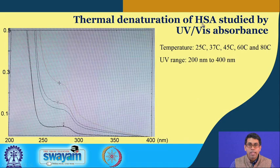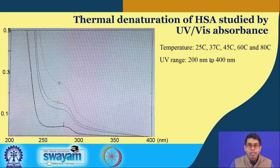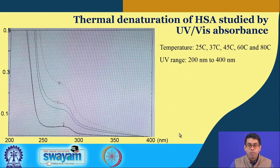For thermal denaturation of HSA studied by UV-visible absorbance, five different temperatures were used: 25°C, 37°C, 45°C, 60°C, and 80°C. The protein sample was heated at these five temperatures and UV-visible spectra were collected in the range of 200 to 400 nanometers. This range was selected because beyond 400 nanometers there was not much signal — mostly noise.